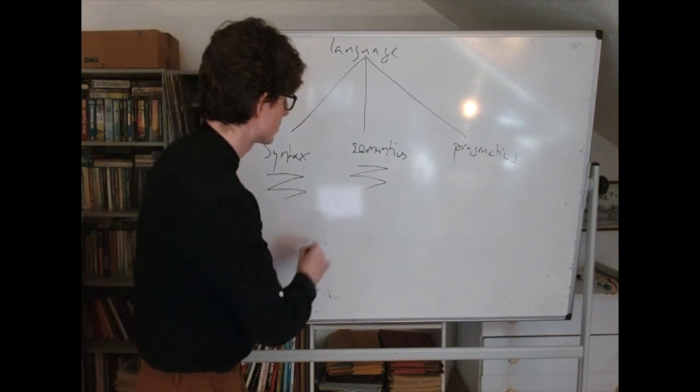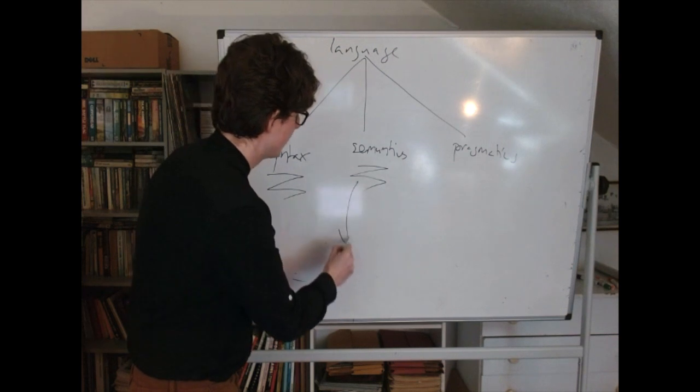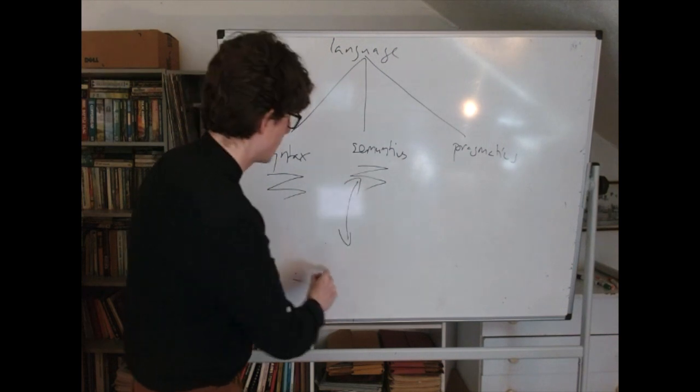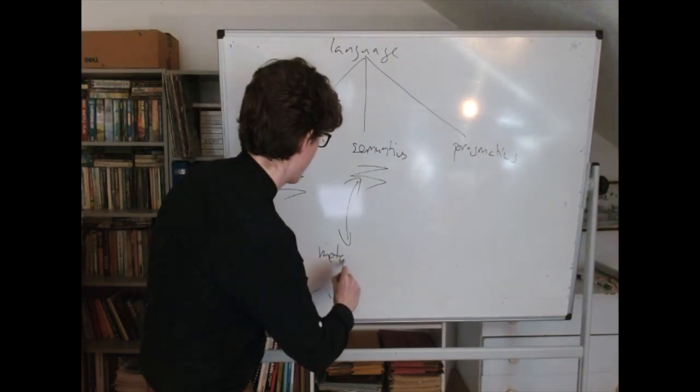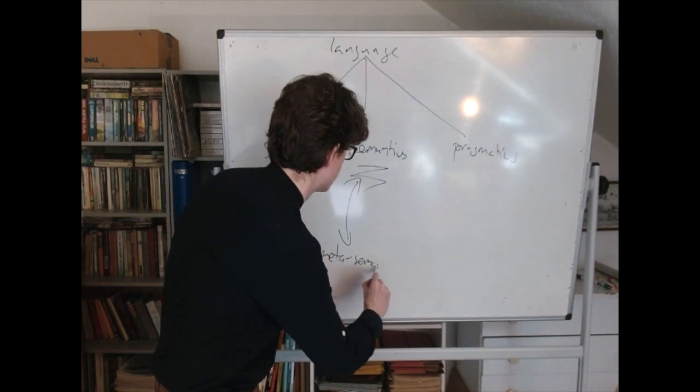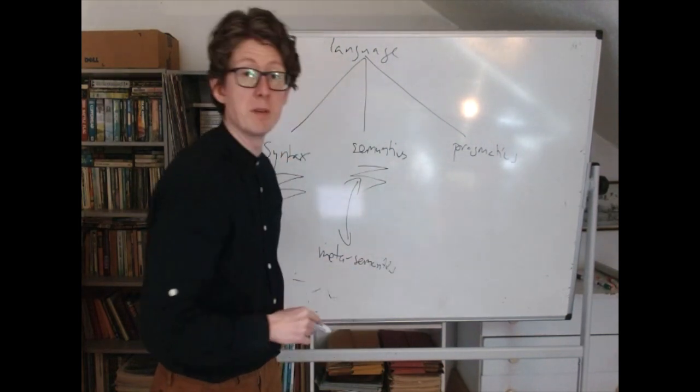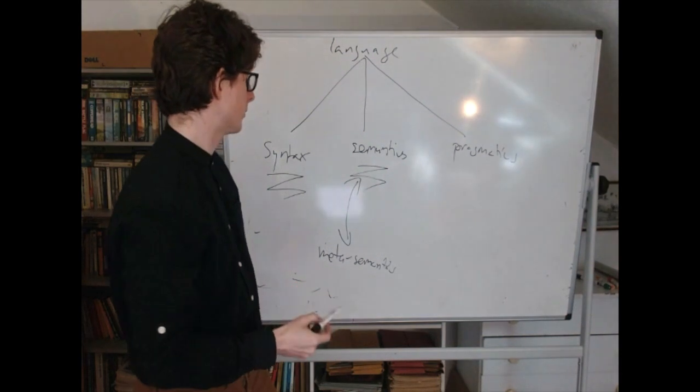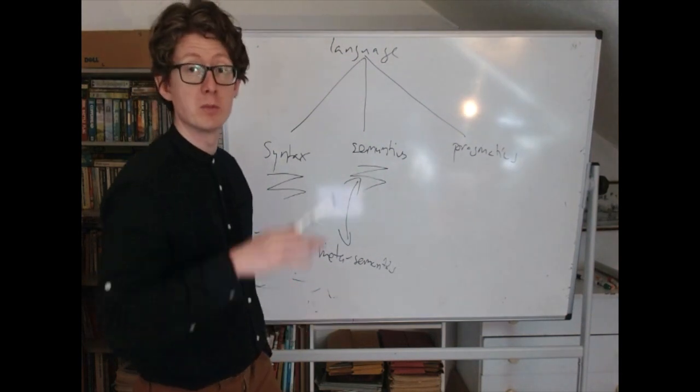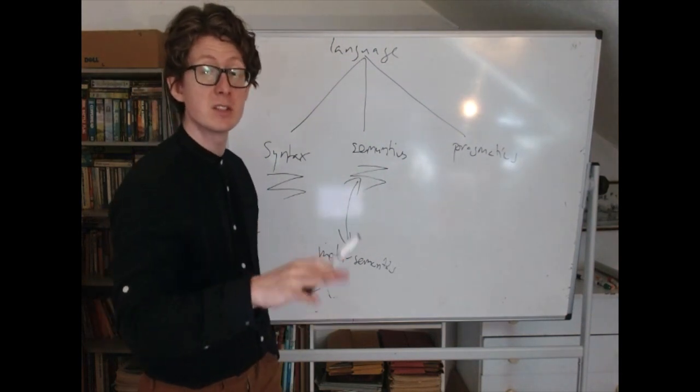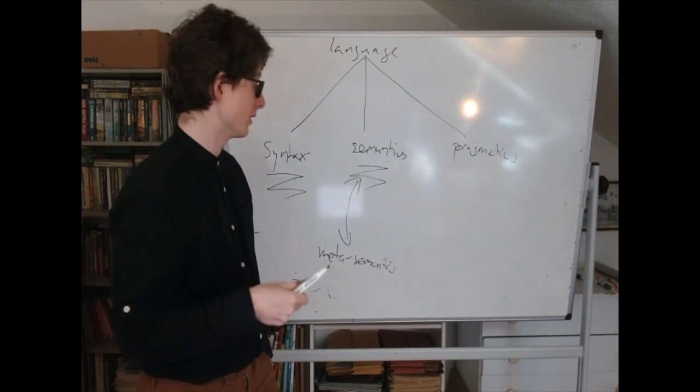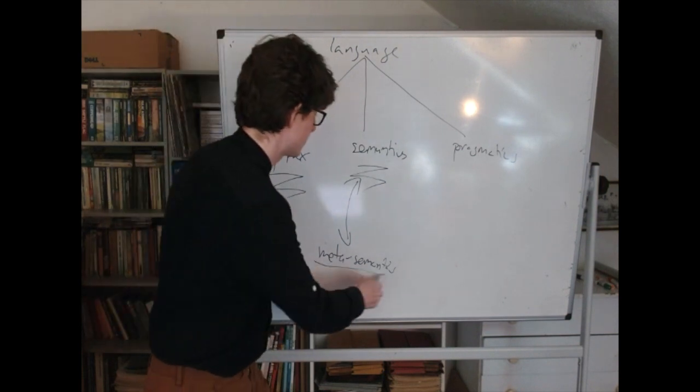There's also a different question about meta-semantics: How do things get their semantics? We've been discussing this up until this week—the relationship between meaning and use. How exactly does use determine meaning, if it does? This is a question in meta-semantics.